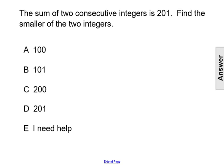The sum of two consecutive integers is 201. Find the smaller of the two integers.